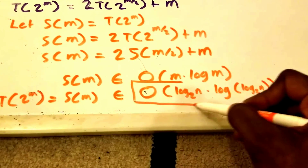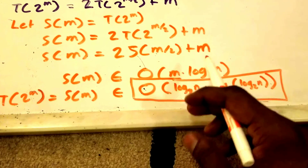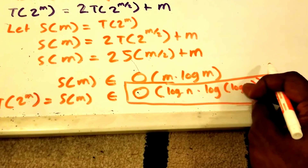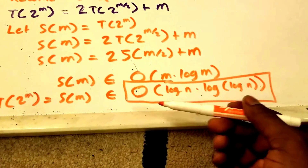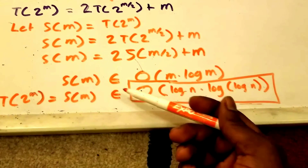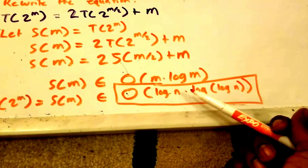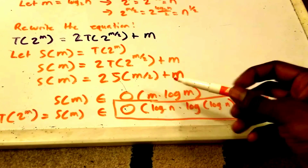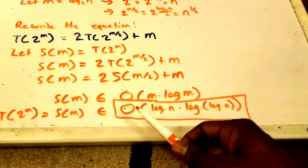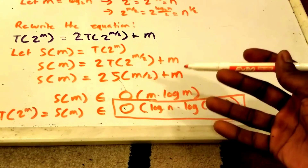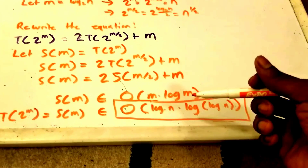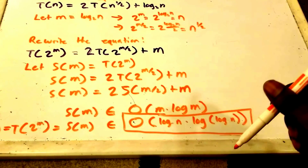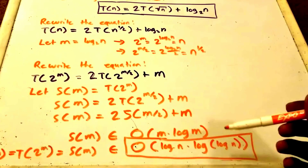The base of the logarithm doesn't matter in this context. So we can simply say T(n) ∈ O(log n · log log n). If you don't understand why the base of logarithms doesn't matter for big-O or other asymptotics like Theta or big-Omega, I'll leave a link in the description to a video explaining why.